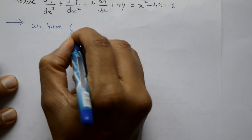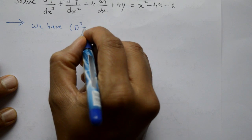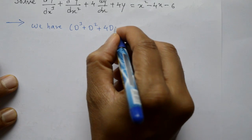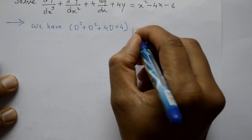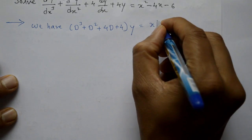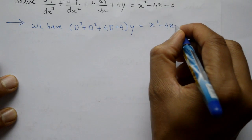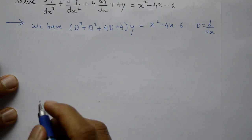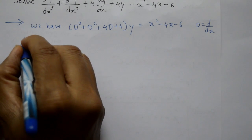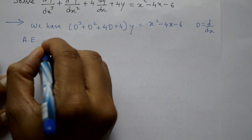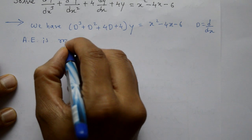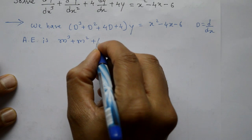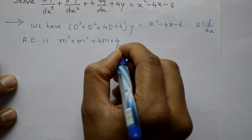We have (D³ + D² + 4D + 4)y = x² - 4x - 6, where D stands for d/dx. Now the auxiliary equation is m³ + m² + 4m + 4 = 0. Find the roots.